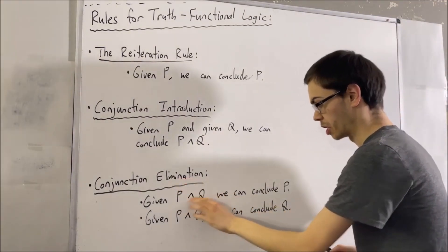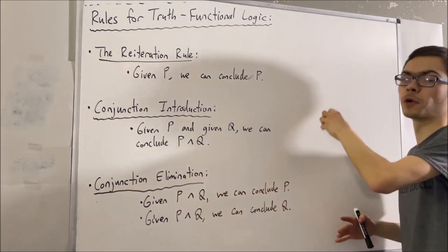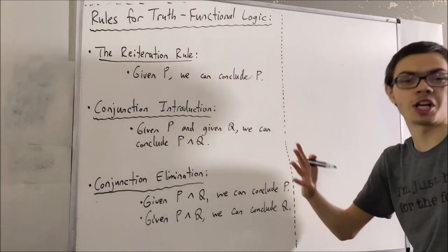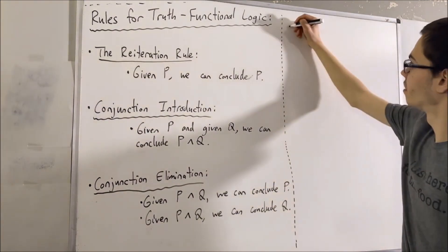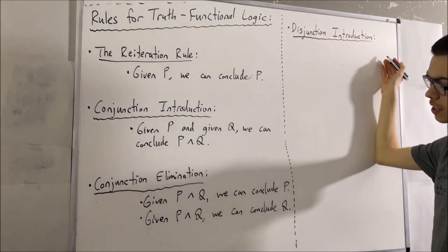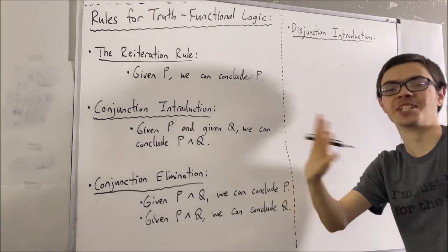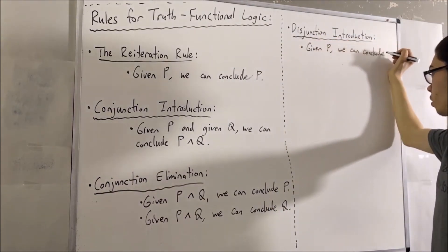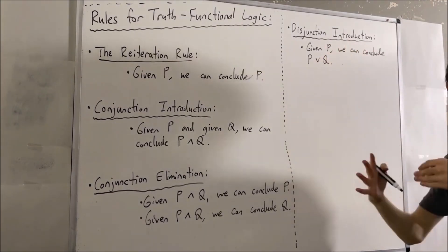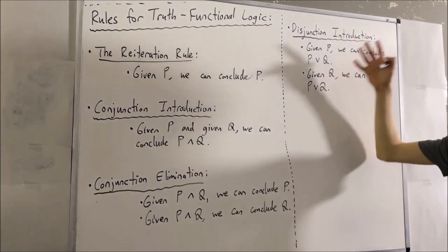We're eliminating the conjunction — it goes away. Now that we've talked about conjunctions, we're going to talk about rules for disjunctions. We have disjunction introduction and disjunction elimination. The way disjunction introduction works is, if we're given a statement P is true, we can conclude that P or Q is true. Similarly, if we're given that Q is true, we can conclude that P or Q is true. That's disjunction introduction.